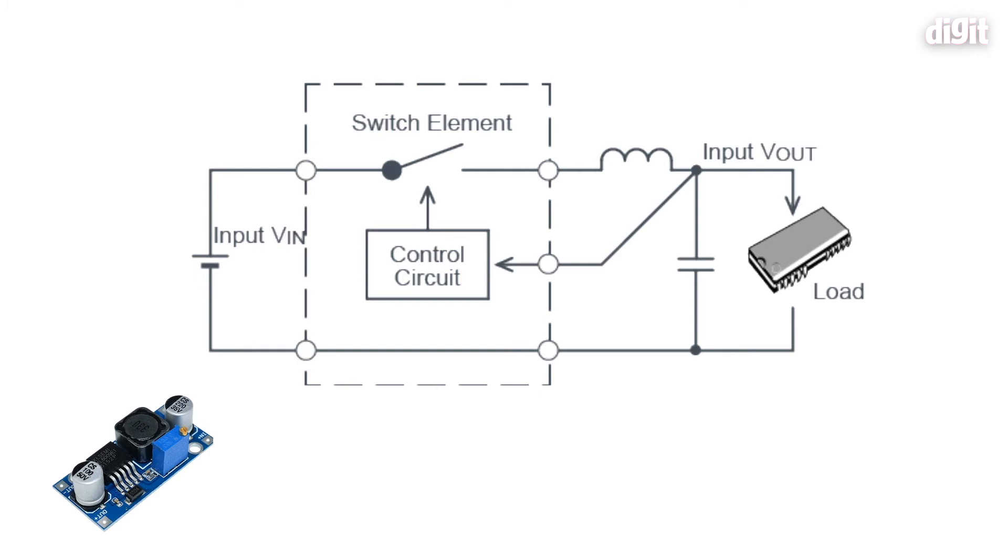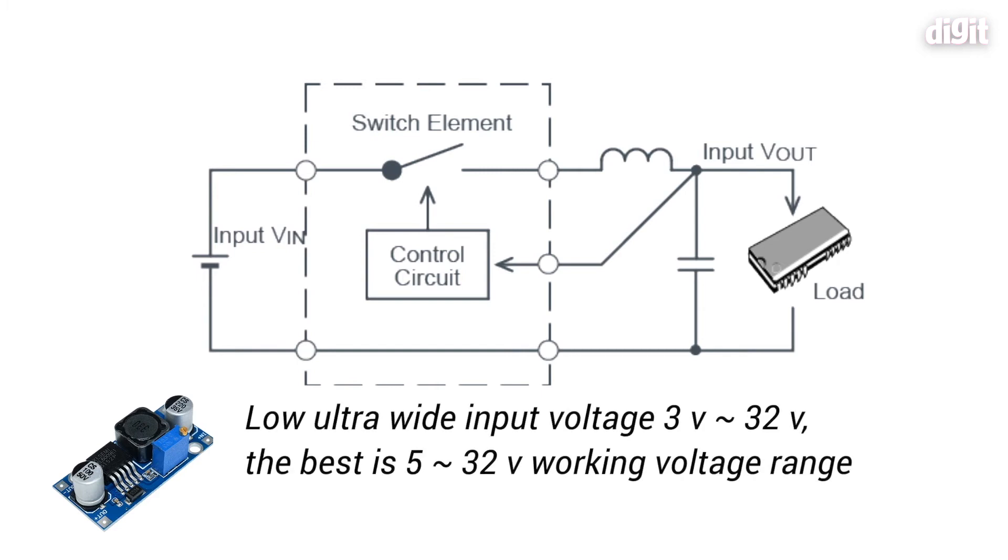Here is a switching module like the XL6009. You have the input terminals on the left, the control element in the center, an inductor load on the right, and lastly the output. What happens is that once the circuit powers up, it reaches a certain voltage level and then decides to turn off - that's the cutoff level. But you still have a capacitor load inside, which means the output is still going to be provided.